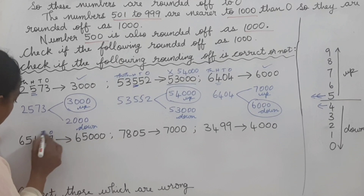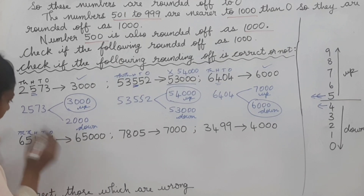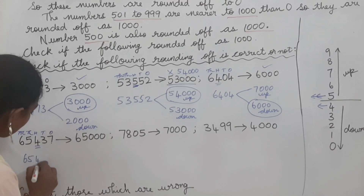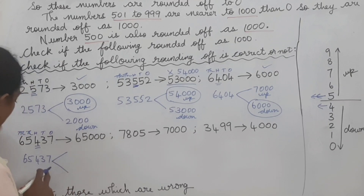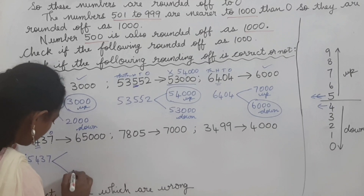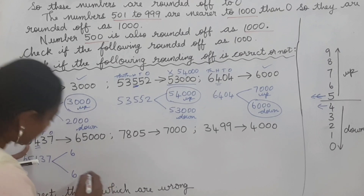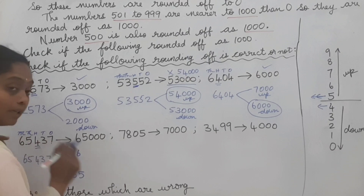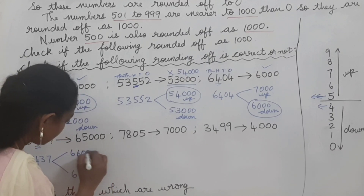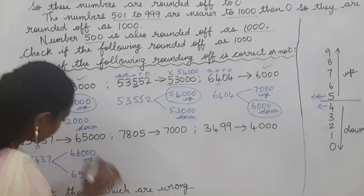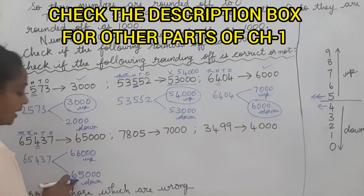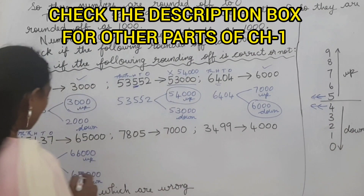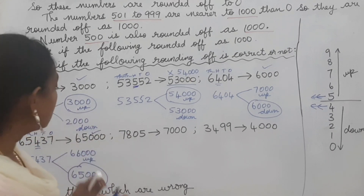Next: 65,437 is rounded off to 65,000. Write ones, tens, hundreds, thousands, ten-thousands. For rounding to nearest thousands, underline the hundreds place. Write 65,437 and put two arrows. The ten-thousands digit 6 stays same. The thousands digit 5 stays below and becomes 6 above, followed by three zeros - so 65,000 below and 66,000 above. The hundreds digit is 4, which is in the lower range - down gives 65,000. So 65,000 is correct and the book answer is right.